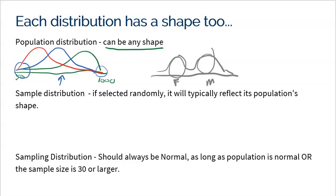What about the shape of a sample? Typically a sample will reflect the population. So if your population is skewed left, skewed right, or normal, then so is any one sample taken from that population. The law of large numbers tells us the bigger your sample size, the more clearly your sample will look like that population. If a sample is skewed right, chances are the population is skewed right. Samples reflect their population.